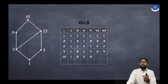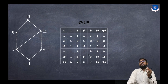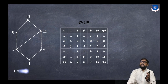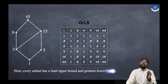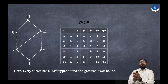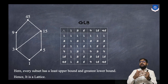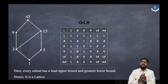As you can see, there is a GLB for each and every pair. Every subset has both a least upper bound and a greatest lower bound, so we can conclude that this is a lattice. This example is an important one.